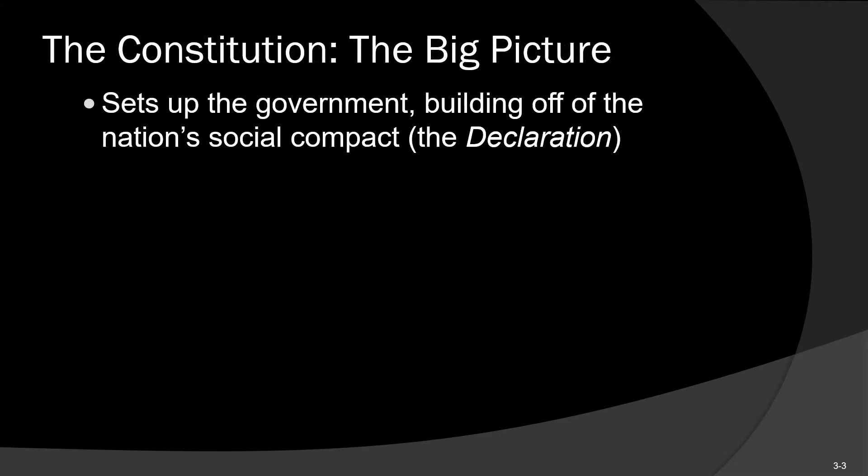In the big picture, the Constitution itself builds off the Declaration of Independence to set up a set of governmental institutions. The Declaration of Independence acted as a social compact — a statement of values and beliefs related to the political environment. The process of actually setting up a governmental system was reserved until later. We had the initial attempt in the Articles of Confederation that failed, and so what we have now is the second Constitution of the United States.